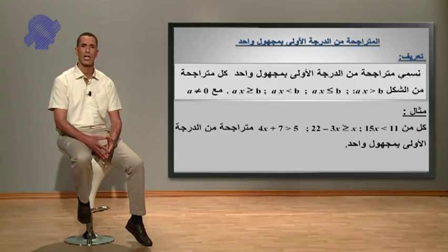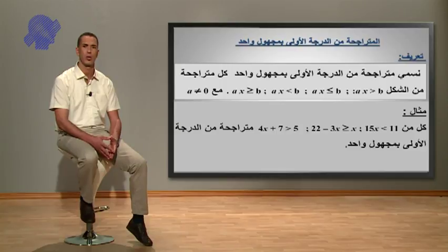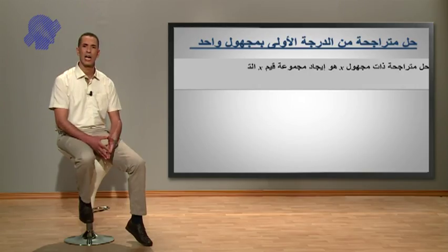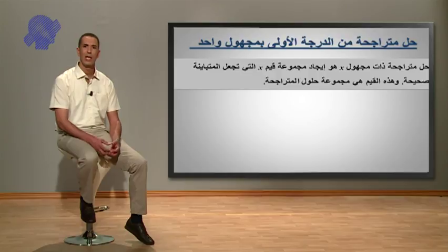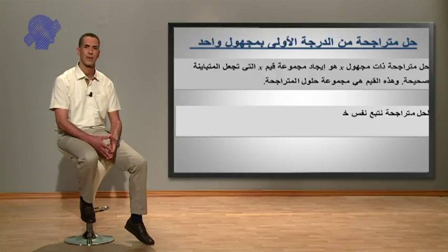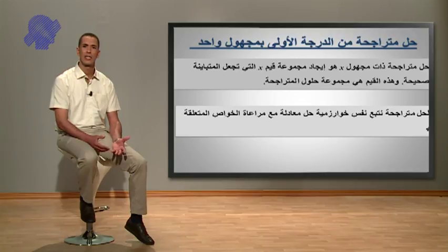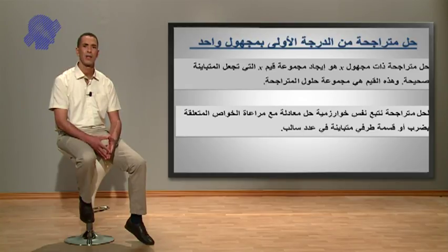الآن حل متراجحة من الدرجة الأولى بمجهول واحد. حل متراجحة ذات مجهول X هو إيجاد مجموعة قيم X التي تجعل المتباينة صحيحة، وهذه القيم هي مجموعة حلول المتراجحة. لحل متراجحة نتبع نفس خوارزمية حل المعادلة مع مراعاة الخواص المتعلقة بضرب أو قسمة طرفي متباينة في عدد سالب.